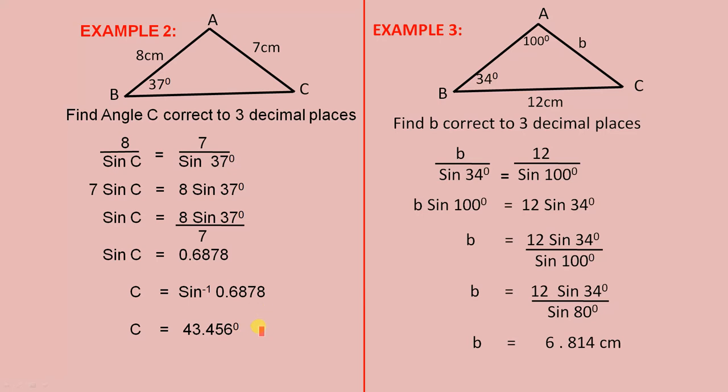So C is the inverse sine of 0.6878. So C is 43.456 degrees, correct to three decimal places.